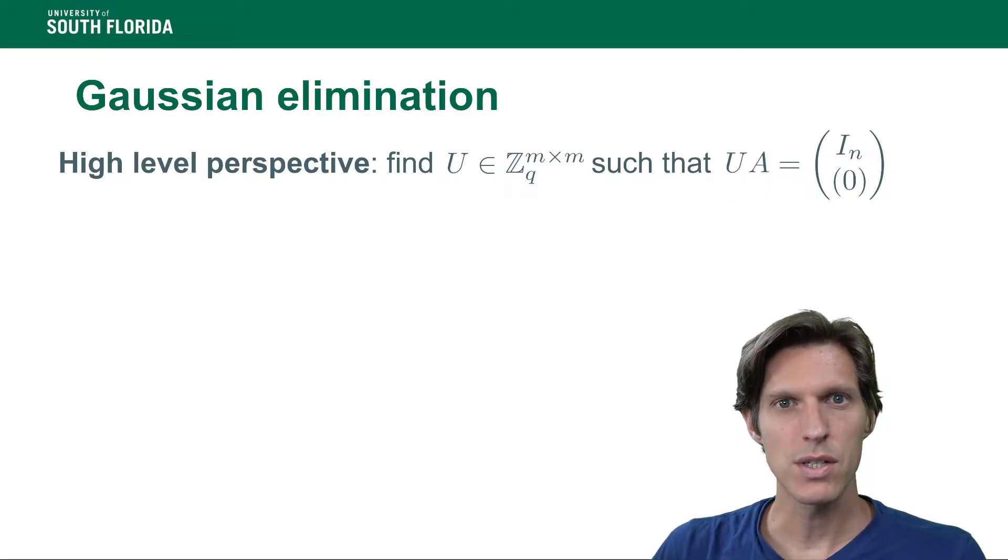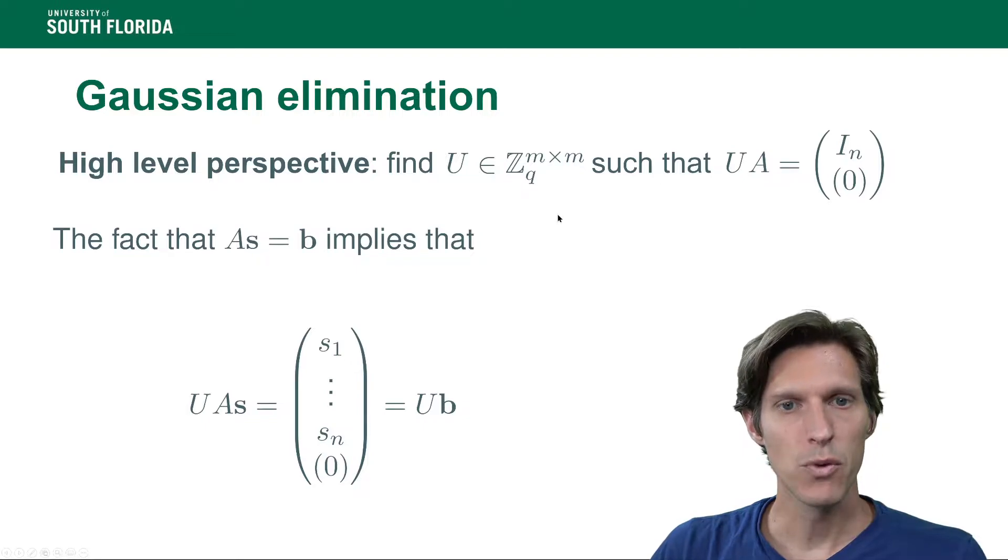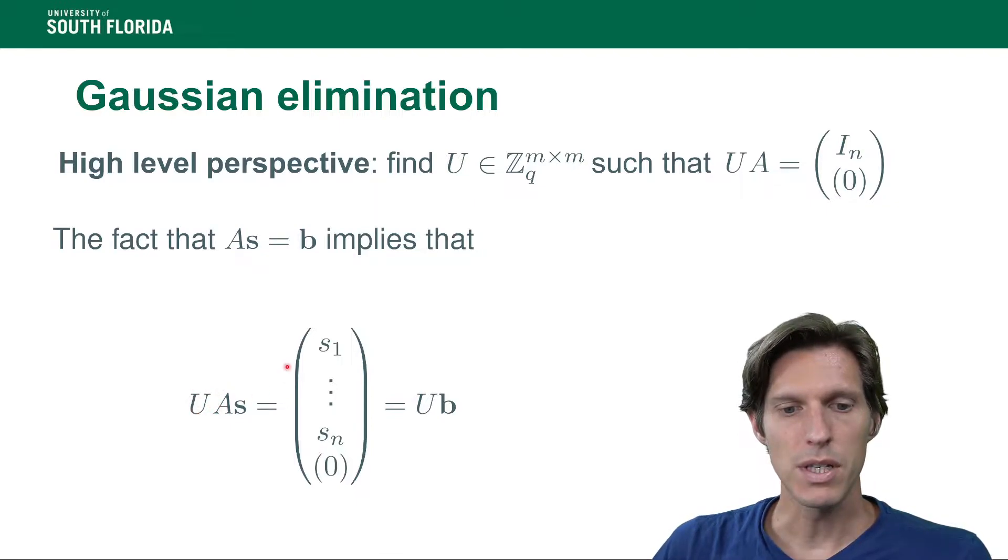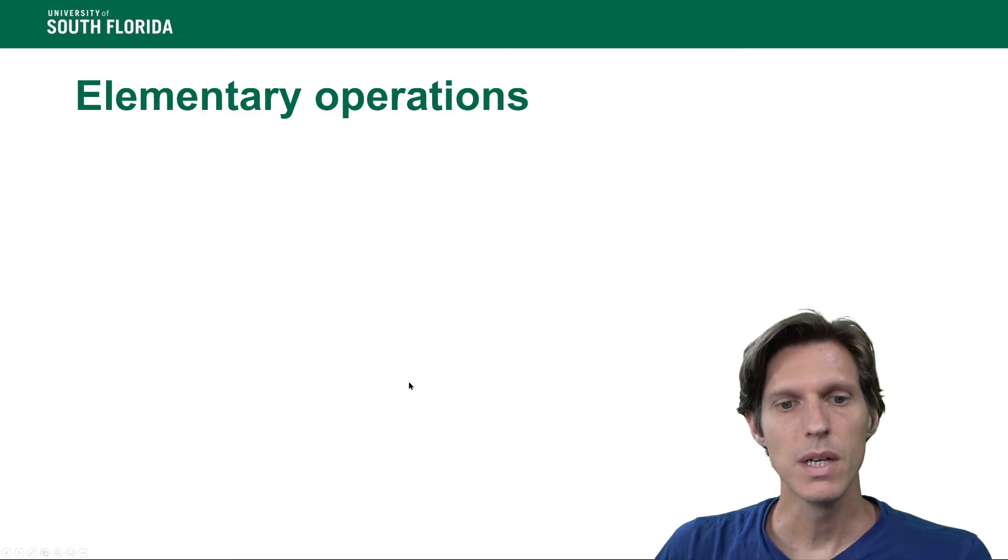Gaussian elimination in a nutshell consists in finding an invertible matrix here of dimension m times m such that multiplying it on the left by a gives us a matrix that has an identity block and all zeros. If we're able to perform that operation, then the matrix relation that we have from the previous relation, a times s equals b, where we have here a matrix vector product, then multiplying that equality on both sides by u gives us that this new matrix here simply has the si's here and it's equal to u times b. Looking at u times b allows us to recover the secret. This matrix multiplication by u on the left can be done in multiple steps, each step corresponding to a multiplication on the left by an invertible matrix u.